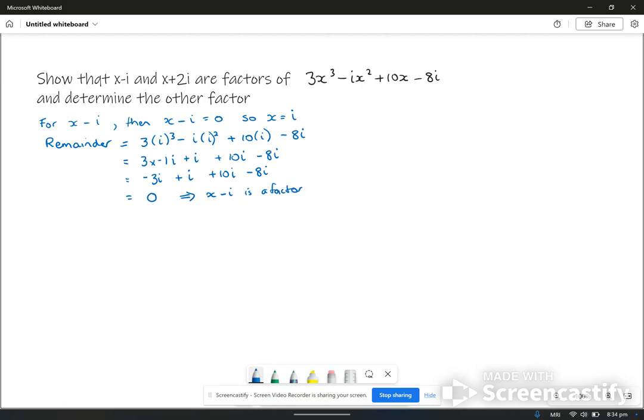And you do the same thing for the other factor. So if we take the other factor which is x plus 2i, make it equal to 0, that means that x equals negative 2i.